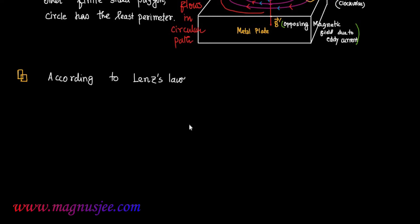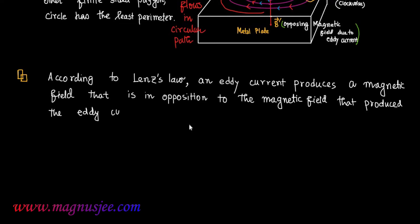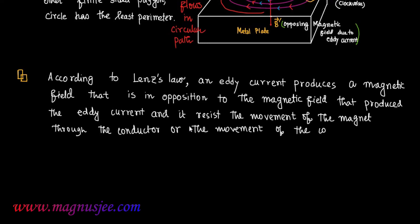According to Lenz's law, an eddy current produces a magnetic field that is in opposition to the magnetic field that produces the eddy current, and it resists the movement of the magnet through the conductor, or other movement of the conductor or coil in the magnetic field.